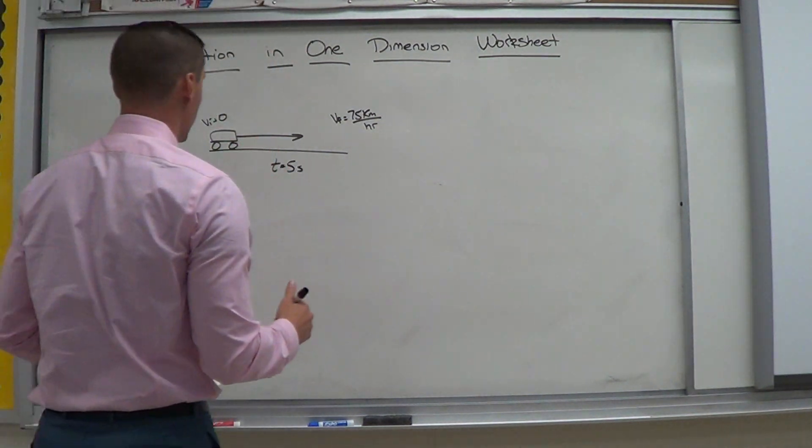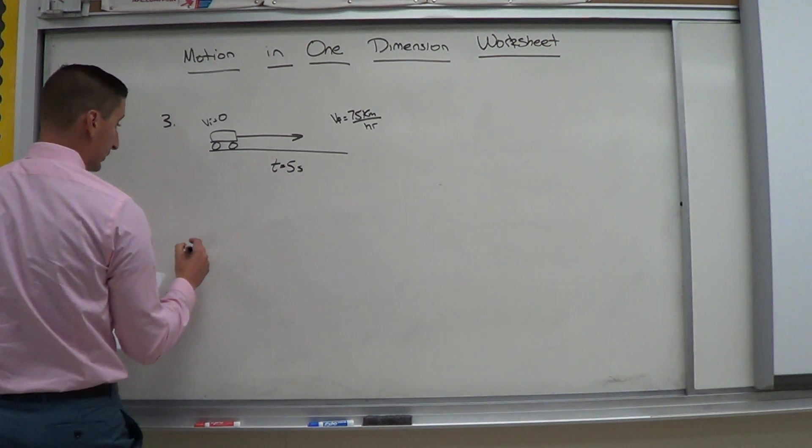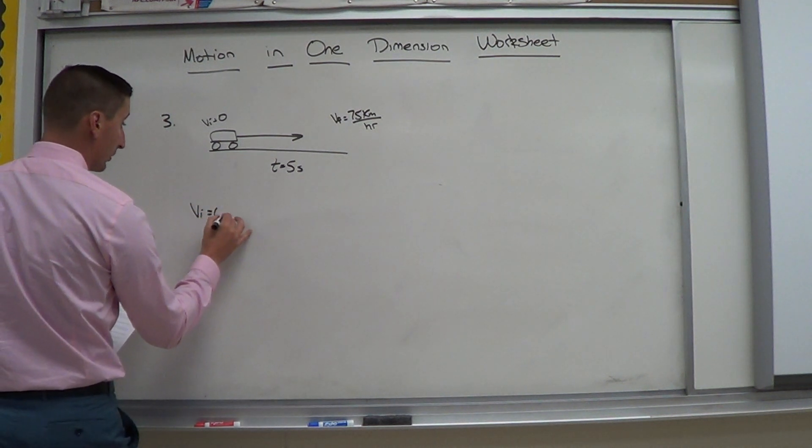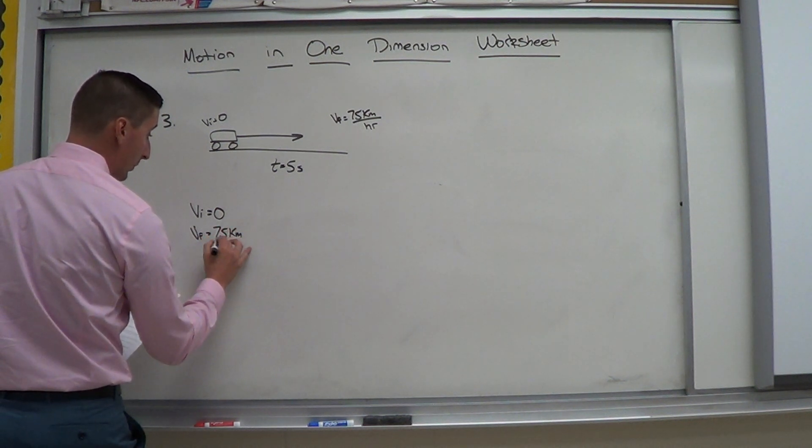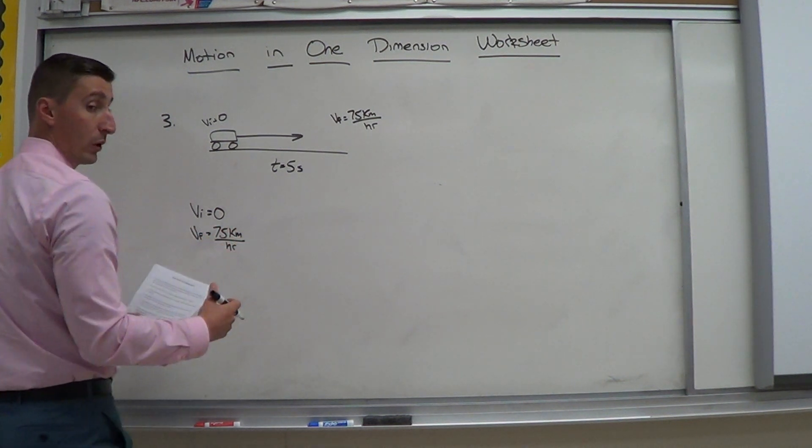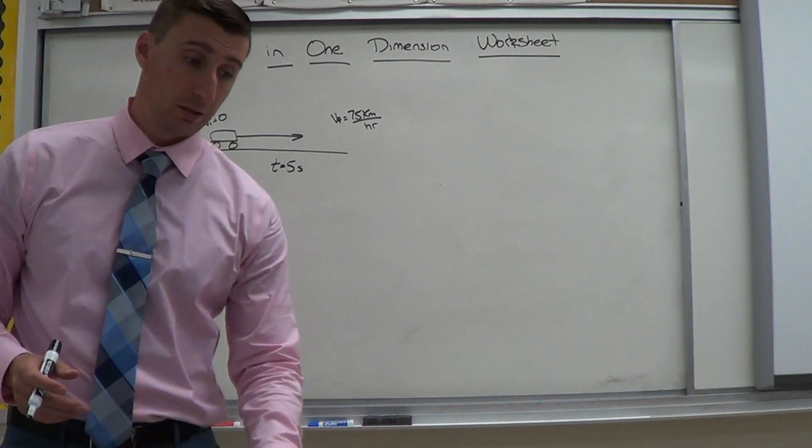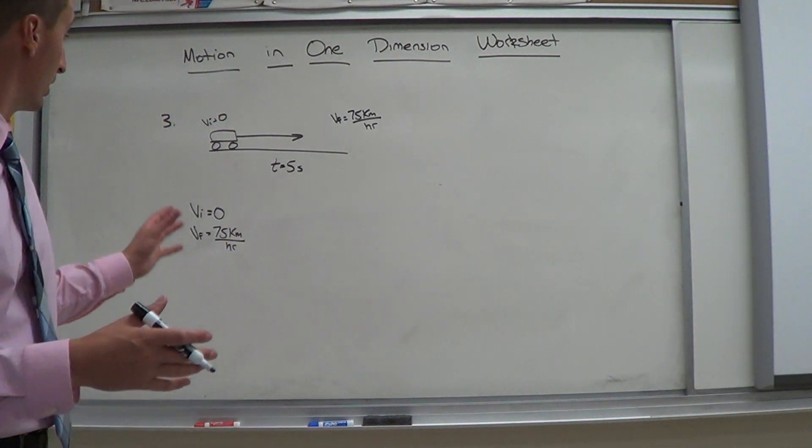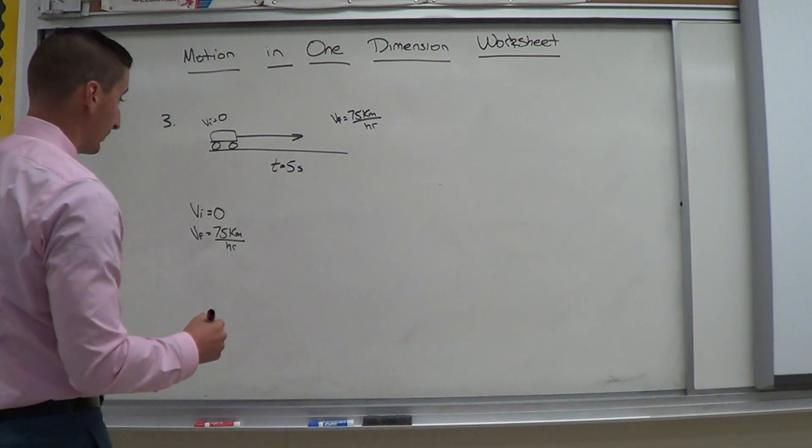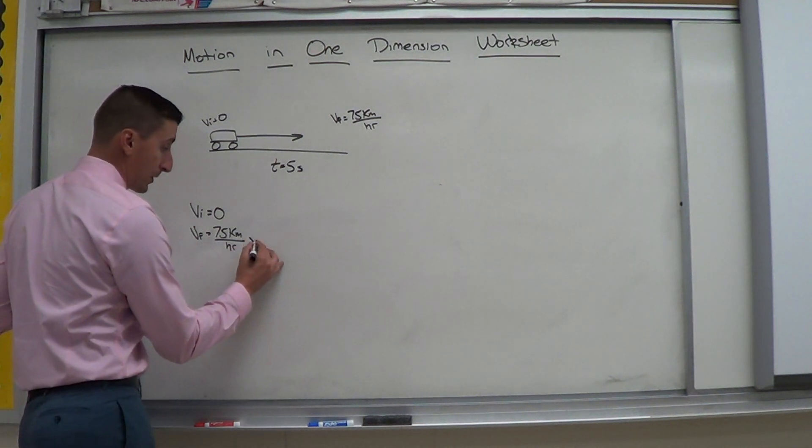It gets to a velocity, velocity final of 75 kilometers per hour. And the time it takes is 5 seconds. So I built that picture just based upon what I read here. Okay? So what I'm going to do is list my knowns. Kind of what I've already done here but list them. Vi equals zero. Vf equals 75 kilometers per hour. And if you notice here, we're not in base units again. Okay? So what we need to do is figure out how to convert this again. So again, I'll do the same steps here. I'll do it quickly here.